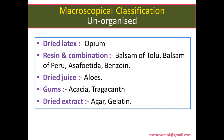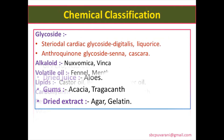Unorganized macroscopical drugs are products of plants. Examples include dried latex: opium; resin drugs: balsam of tolu, balsam of peru, asafoetida; dried leaf juice: aloes; gums: acacia, tragacanth; dried extract: agar and gelatin.